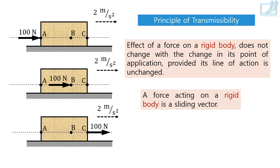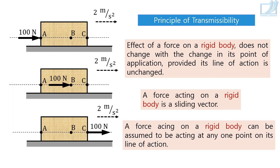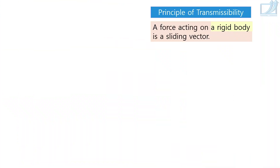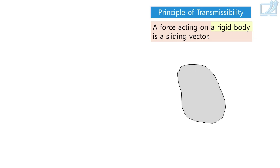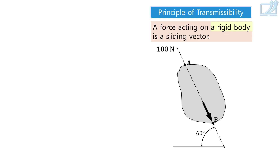This statement is the principle of transmissibility. In other words, a force acting on a rigid body is a sliding vector — a force acting on a rigid body can be assumed to be acting at any one point on its line of action. So this force can be assumed to be acting at point B, at point C, or any other point on line ABC. If I say a 100N force is applied on a rigid body along line AB, then any point on the line you can consider as its point of application — you may say force is acting at point A, at point B, or at any single point on line AB.